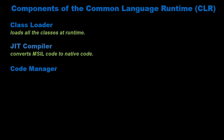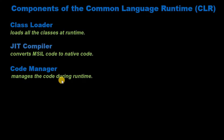Code Manager manages the code during runtime. The code manager in CLR manages the code developed in the .NET framework, so it is called managed code. The managed code is converted to IL code — that is Intermediate Language code — by the language-specific compiler, then JIT converts IL code to native code.